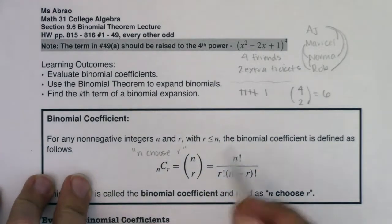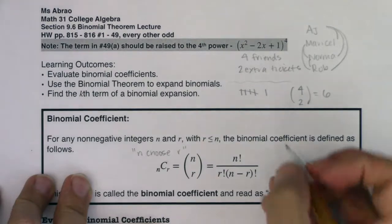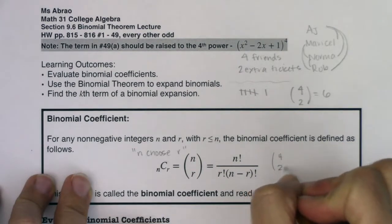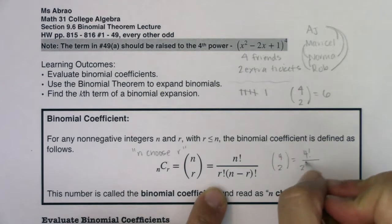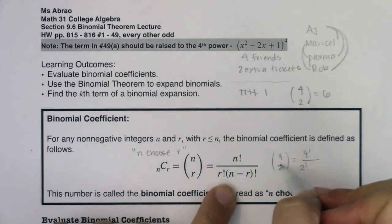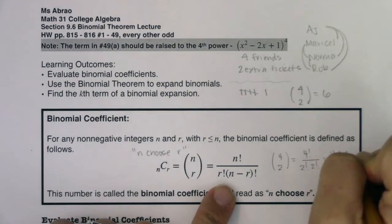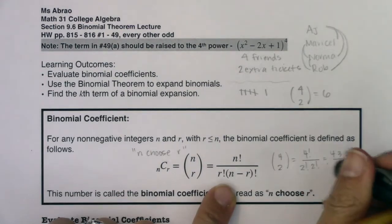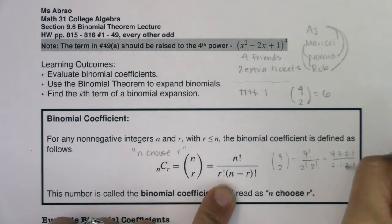The formula for n choose r is: n factorial over r factorial times (n minus r) factorial. For four choose two: we get 4! over 2! times 2!. Four factorial is 4×3×2×1, and the two factorial in the denominator cancels with part of the numerator, leaving 12 over 2, which is 6. Sure enough, it's six.